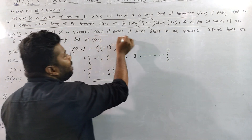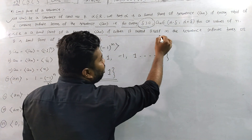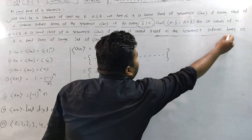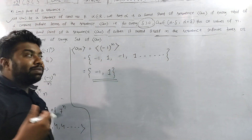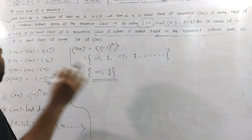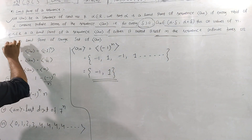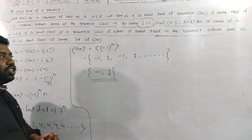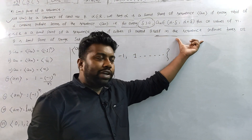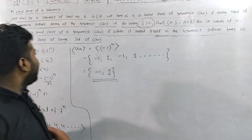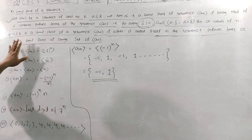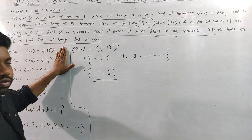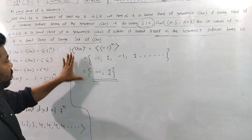Alpha is a limit point if either it repeats itself an infinite number of times, or it is a limit point of the range set of (a_n). Either it repeats infinitely many times, or it is a limit point of the range set of (a_n).